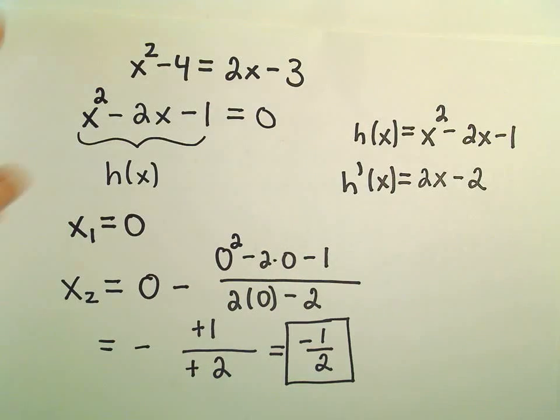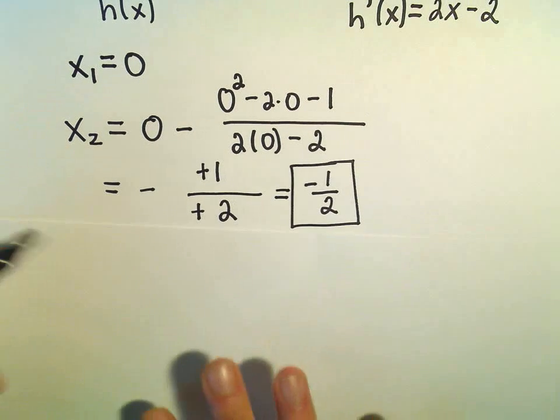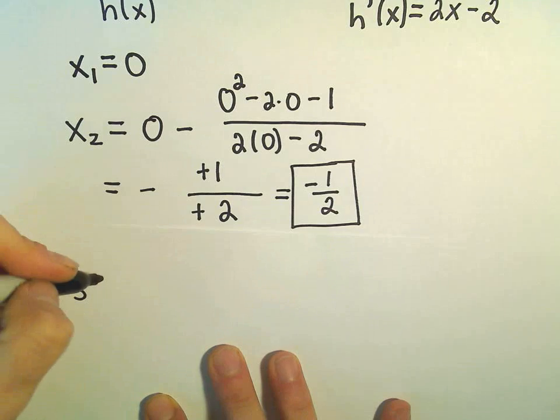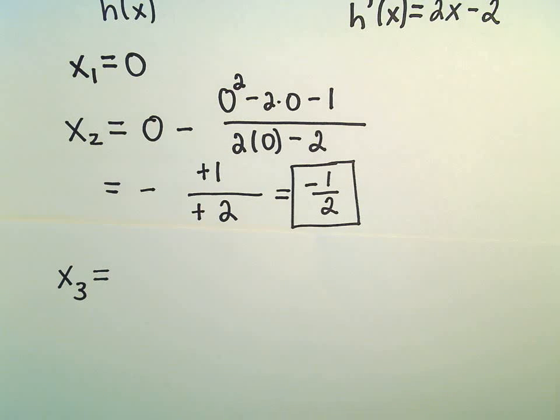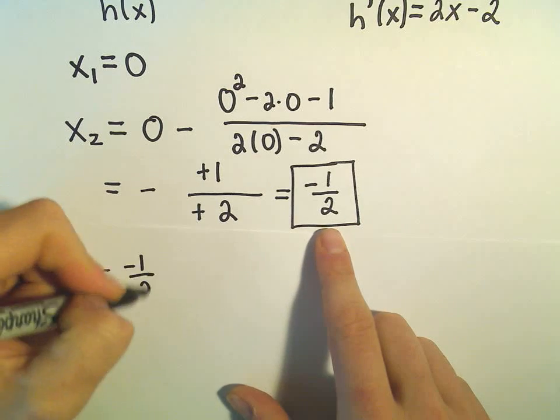And now I just do the exact same thing. So it's just a big infinite loop here. So now to figure out our third guess, I'm going to take our second guess, which is negative 1 half, and then we subtract away.